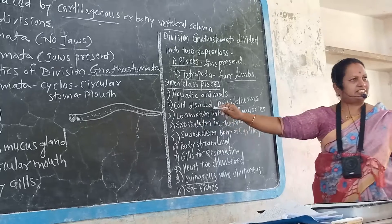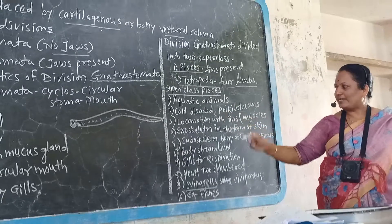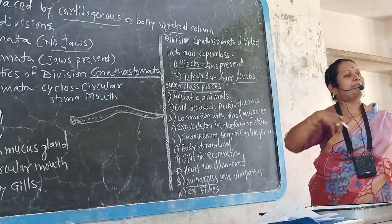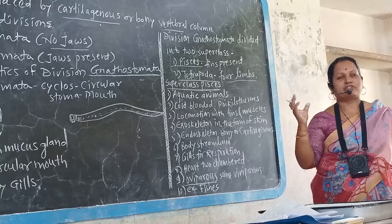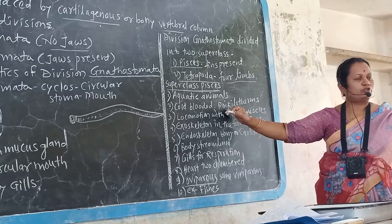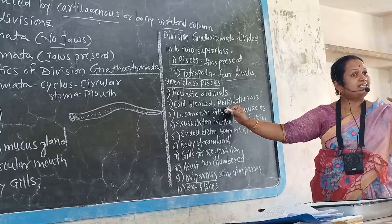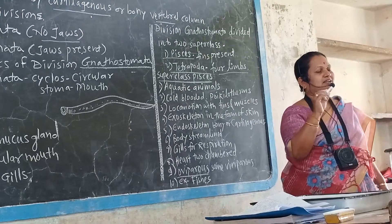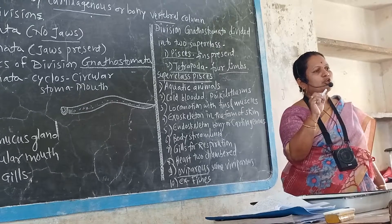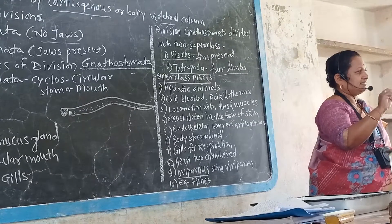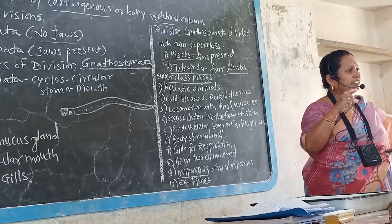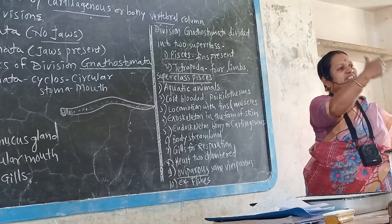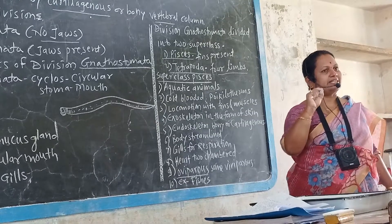Second characteristic: they are cold-blooded, also called ectotherms. They can adjust their body temperature according to surrounding temperature. In contrast, human beings are warm-blooded and maintain a constant body temperature of 37 degrees Celsius, irrespective of changes in environmental temperature.